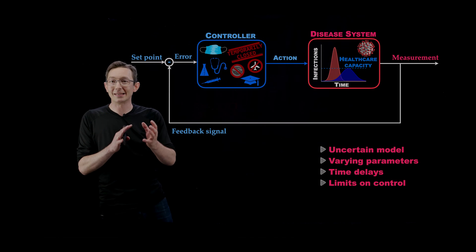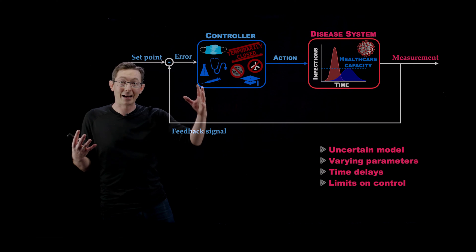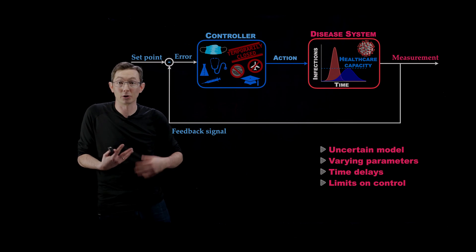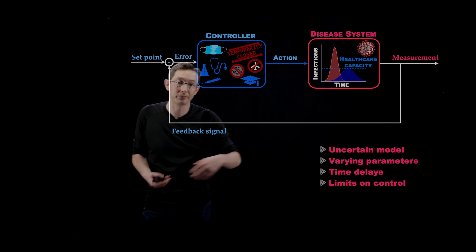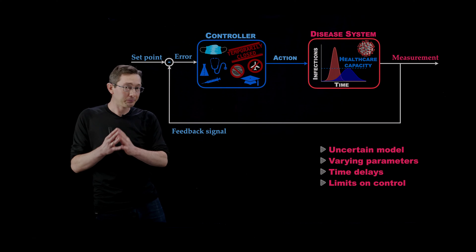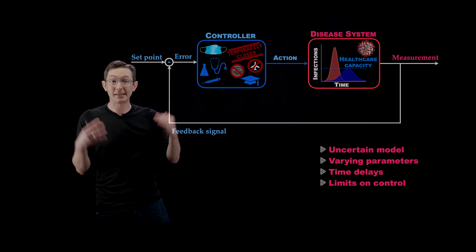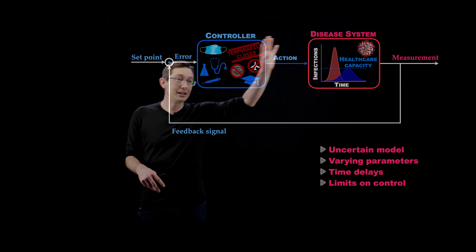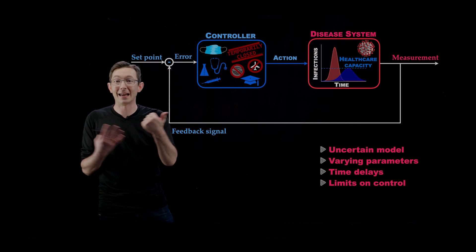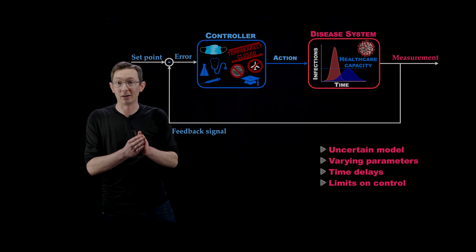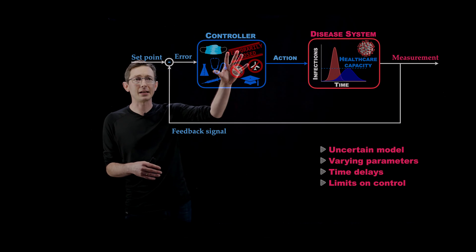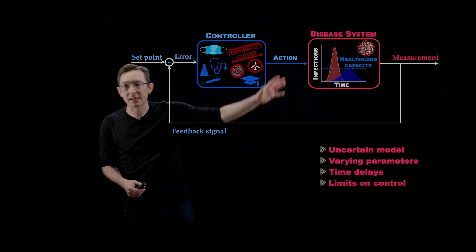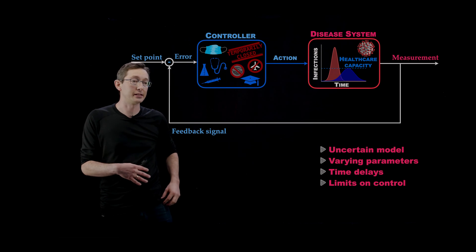We also have varying parameters, so this system is constantly changing. As different control actions are being taken, as the seasons change, as time goes on, all of the parameters of the system are changing. That's part of what we're trying to do is change these parameters through control. Time delays are a major problem in control systems in general. If you want really fast aggressive feedback control, time delays can really hurt your performance and hamper that robustness. There's time delays in every aspect of this - in your measurements, in the transmission itself, incubation periods, and in the controller. Understanding how time delays affect performance and what we can expect out of our control system is really important.